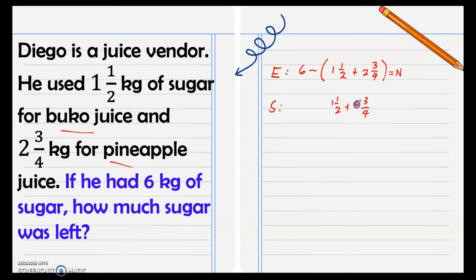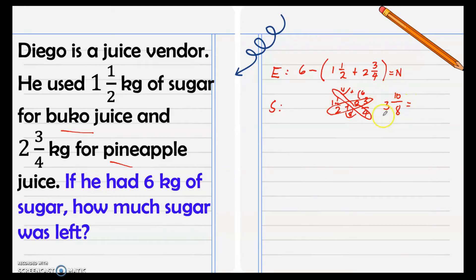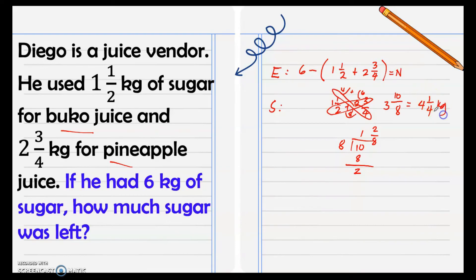We solve one and one-half plus two and three-fourth. The fractions are dissimilar so we use the butterfly method: four times one is four and two times three is six, then add the numerators to get ten over eight. Add the whole numbers: one plus two is three, giving three and ten over eight. Since ten over eight is an improper fraction, ten divided by eight is one remainder two, so that's one and two-eighths. Adding one to three gives four, and simplifying two-eighths gives one-fourth. Total sugar used: four and one-fourth kilograms.